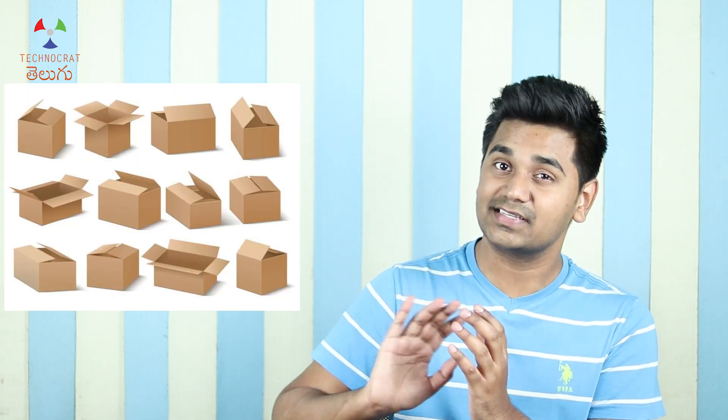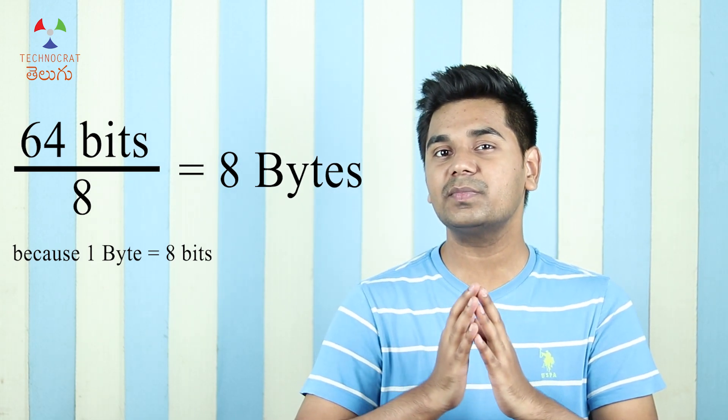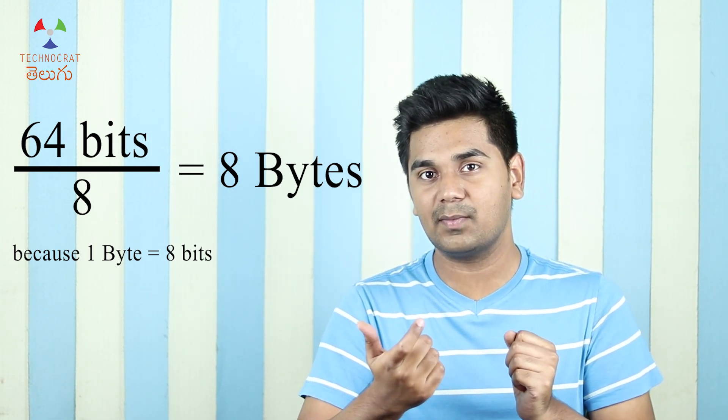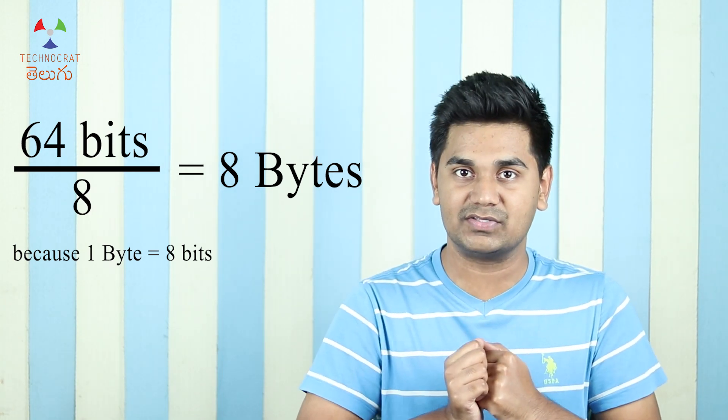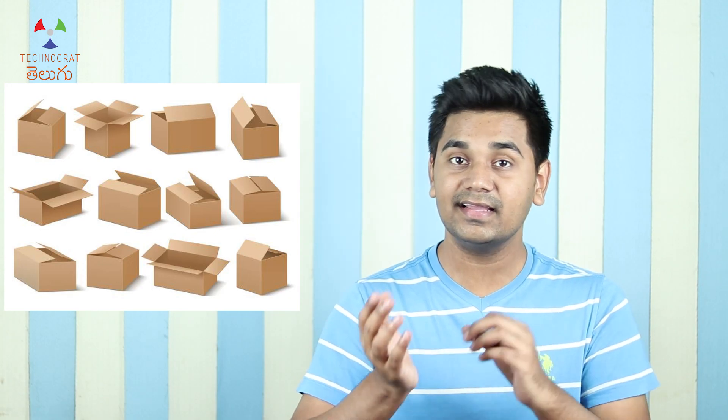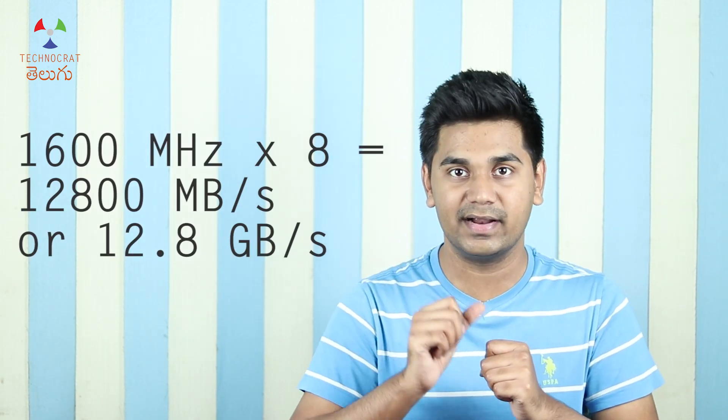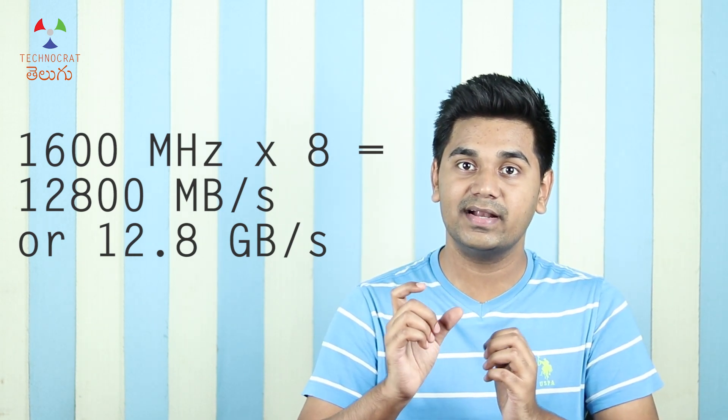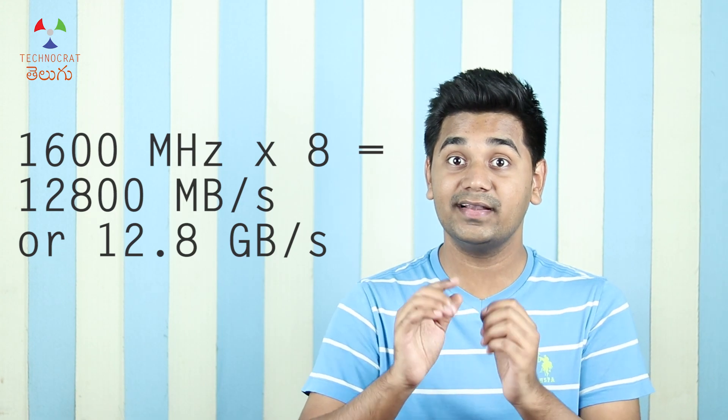If RAM has a 1600 MHz clock speed, that means data is pumped 1600 million times per second between RAM and the CPU. In a 64-bit system, one transfer carries 64 bits. Since 1 byte equals 8 bits, 64 divided by 8 gives 8 bytes per transfer. So 1600 multiplied by 8 equals 12,800 MB — that is 12.8 GB of bandwidth.